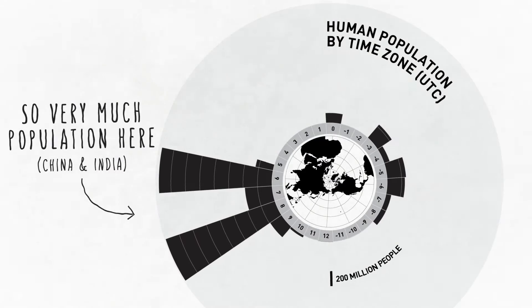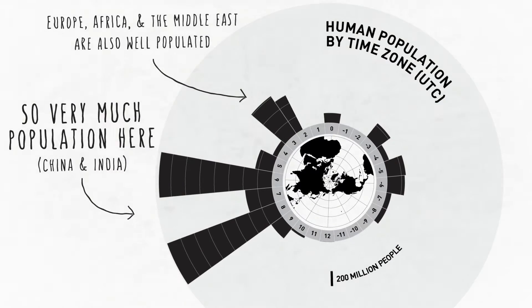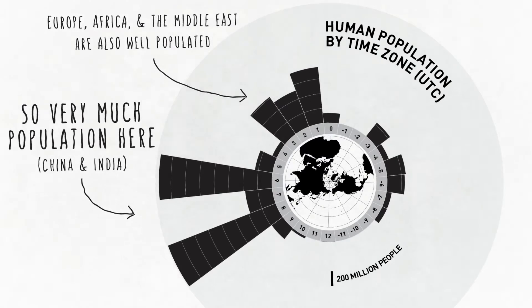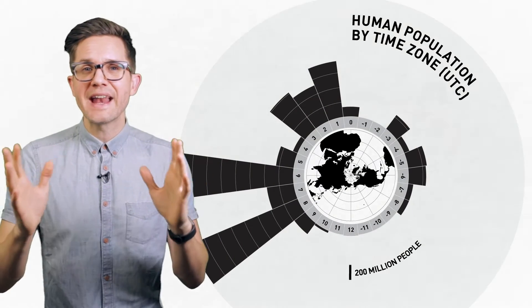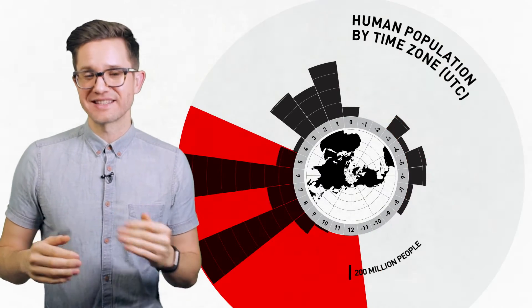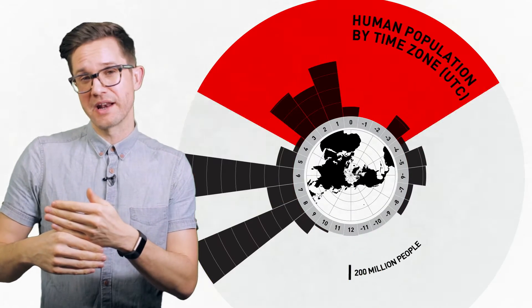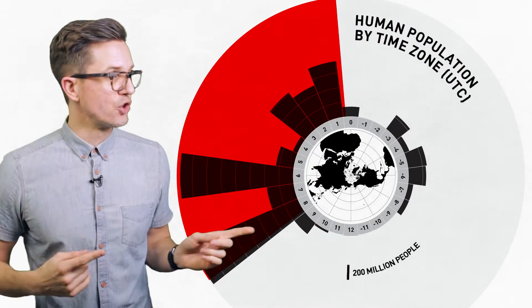China and India have so many people, so much population, it really dwarfs everything else on the rest of the earth, and it's really going to skew the numbers that we have that we're looking at. Now that we have our numbers, we can find out when the most people are sleeping by figuring out which 8-hour time zone range contains the most population. And then we know, at 7am before you hit that 8-hour range, all those people will be sleeping. That range is here.